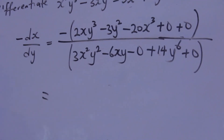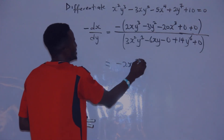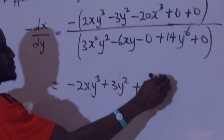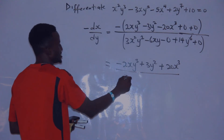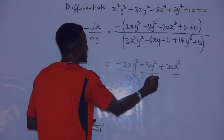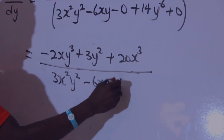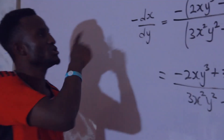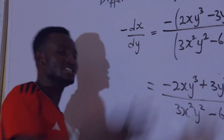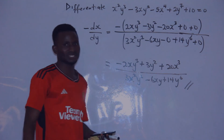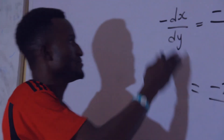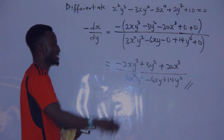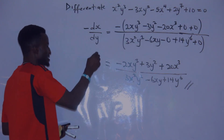Opening the bracket with the minus sign, we now have: minus 2xy cubed plus 3y squared plus 20x cubed, all over the denominator: 3x squared y squared minus 6xy plus 14y to the power 6. This is the answer for the implicit differentiation. This is your dy/dx.